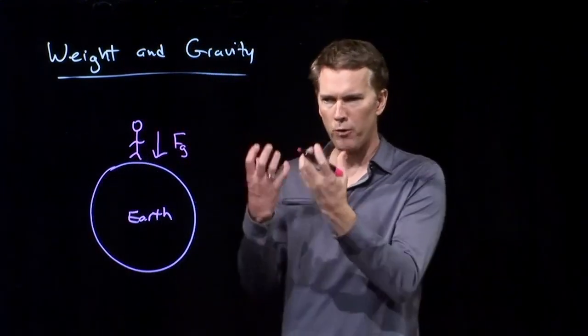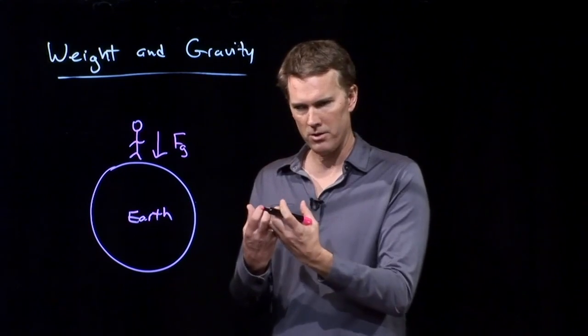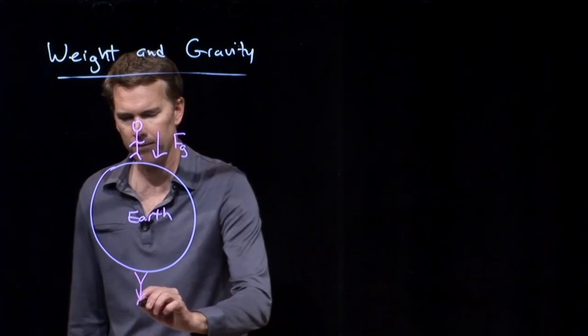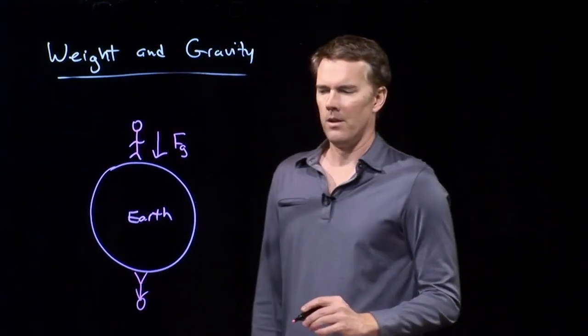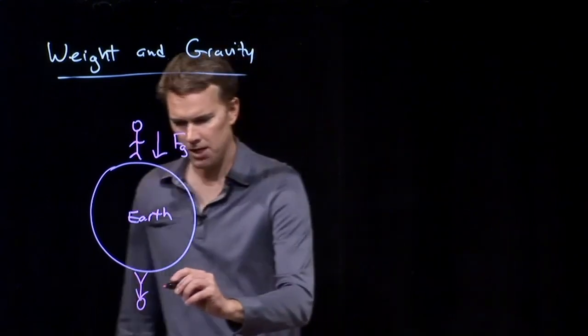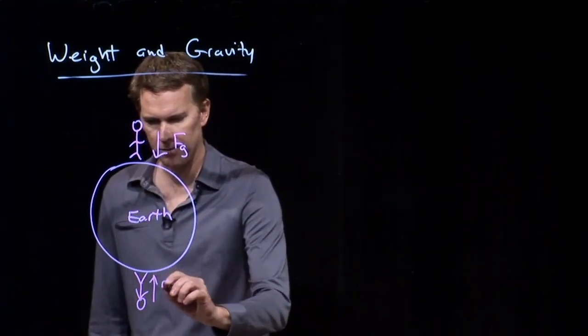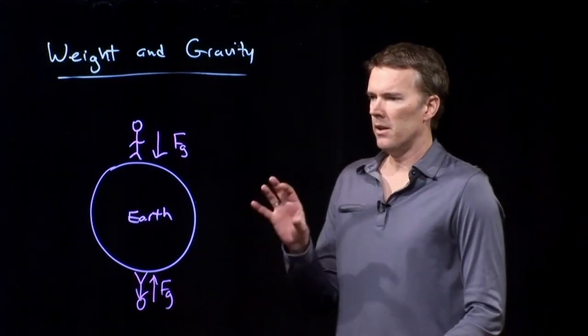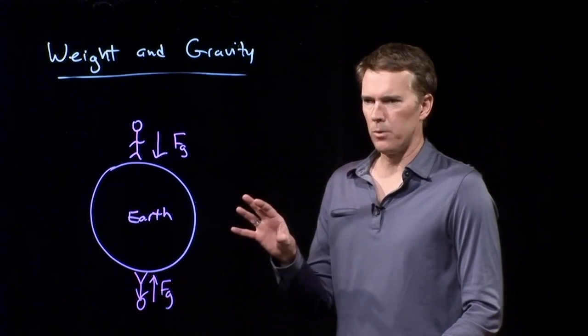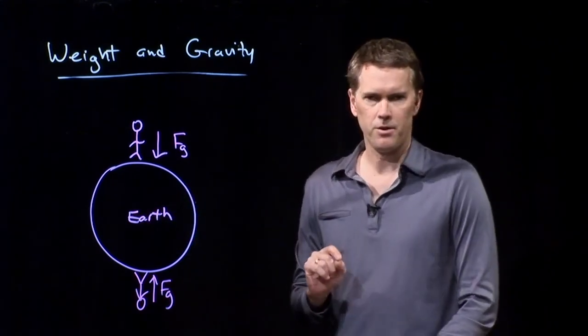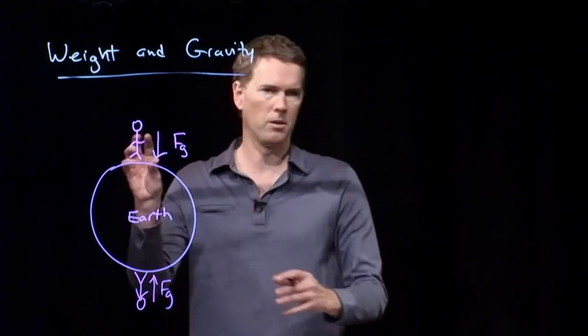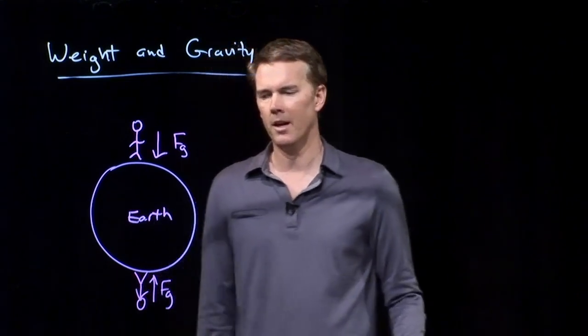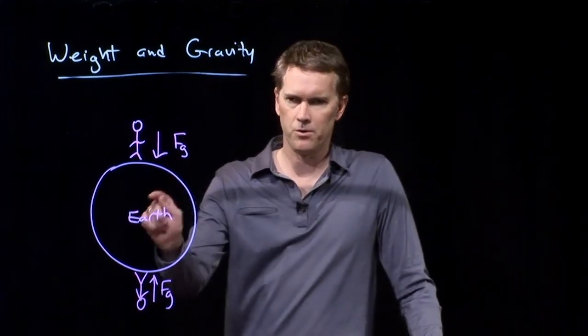That's the gravitational force of the Earth pulling down on you. Now let's say somebody else standing on the other side of the Earth also experiences a force F sub g, but of course that F sub g is pointing upwards. This is the way gravity works. It always points towards the center of the Earth. So if you're on the Moon, it's going to point towards the center of the Moon. If you're on Mercury, it's going to point towards the center of Mercury. The force is always acting towards the central point.